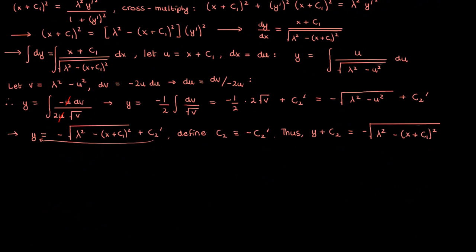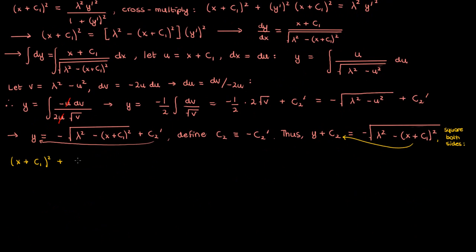And finally we can square both sides and move the x plus c1 term to the left to get x plus c1 squared plus y plus c2 squared equals lambda squared. And this is actually the equation of the circle with radius lambda centered at negative c1 comma negative c2 and I'm going to call this equation star.